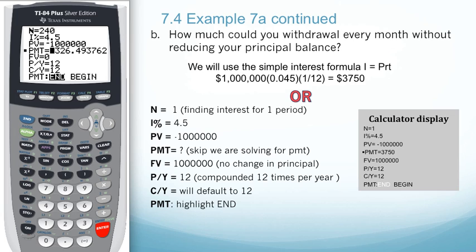In part B, we want to know how much you can withdraw every month without reducing the principal balance of a million dollars.